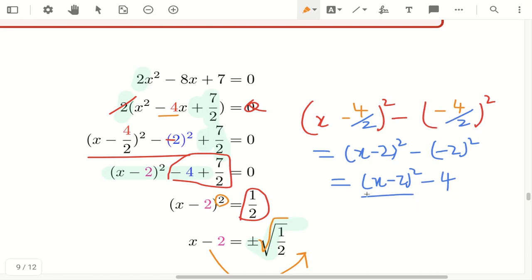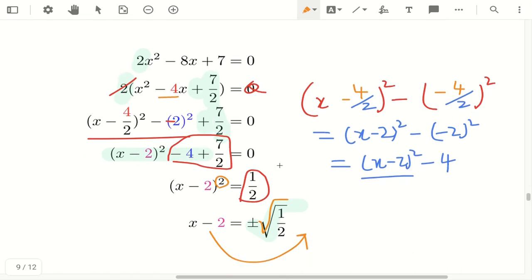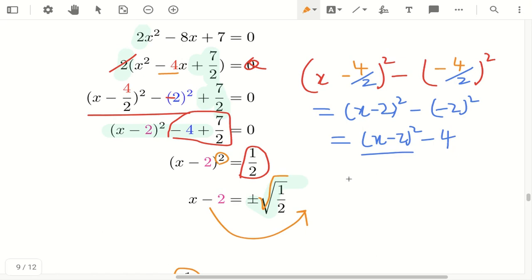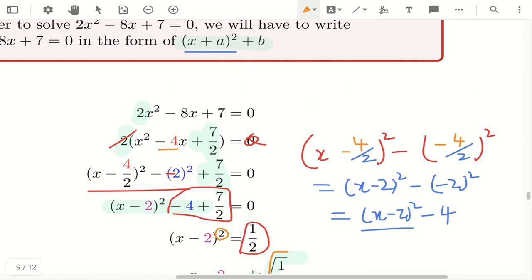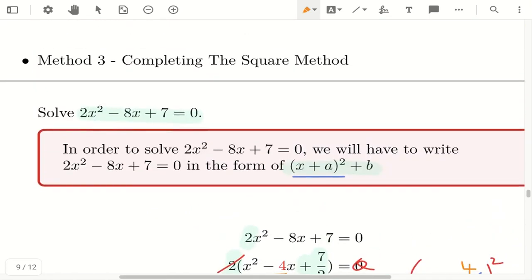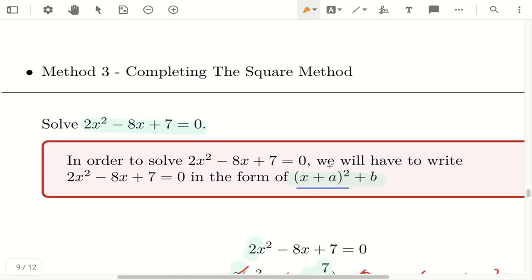Then, you end up with this, and then add 7 over 2, and then as you go. So, this is how we do this, completing the square method. I hope it helps. Maybe before you try out, you look at my solutions, you can try to solve this.